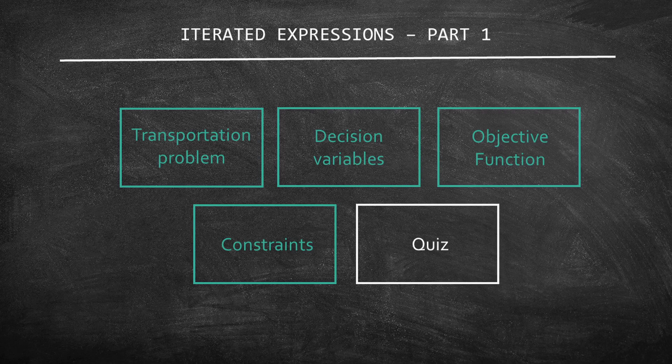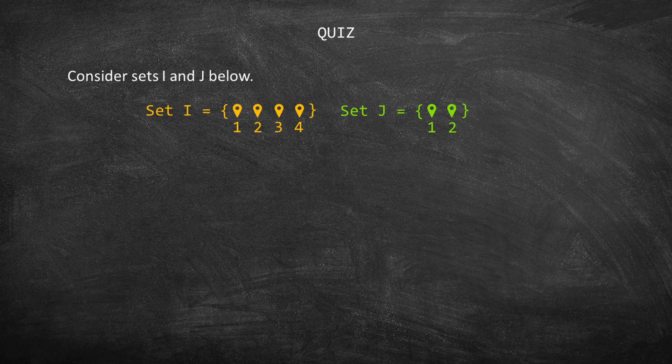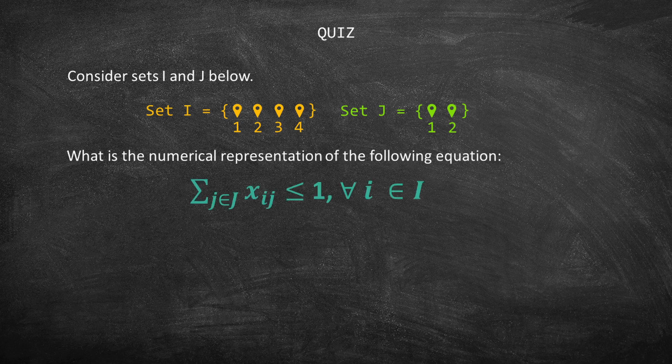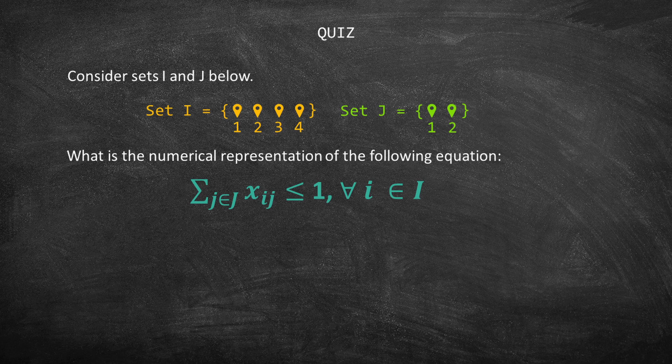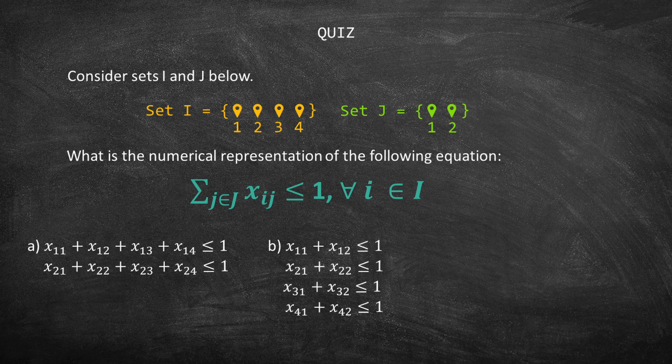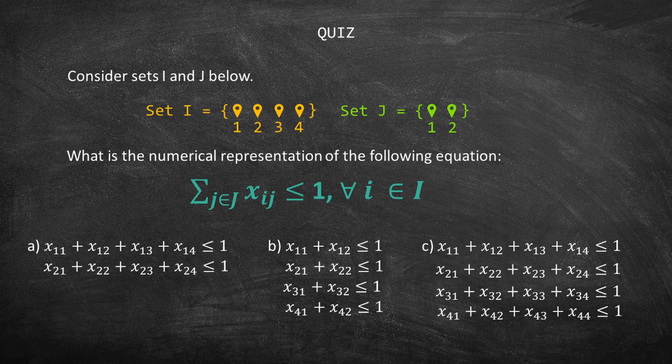Before we conclude this study, let me pose you a challenging question. It's time for our quiz. Consider sets I and J below. Set I has elements 1, 2, 3, and 4, whereas set J has elements 1 and 2. What is the numerical representation of the equation sum of J in set J of Xij less than or equal 1 for every I in set I? You have three options, A, B, and C. Which one is correct? I recommend that you pause the video now and try to solve it. I will give you the answer after a couple of seconds.